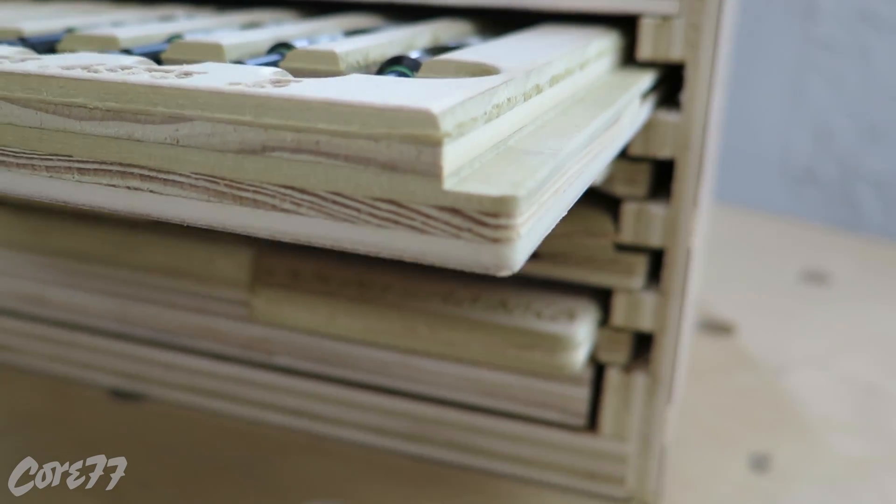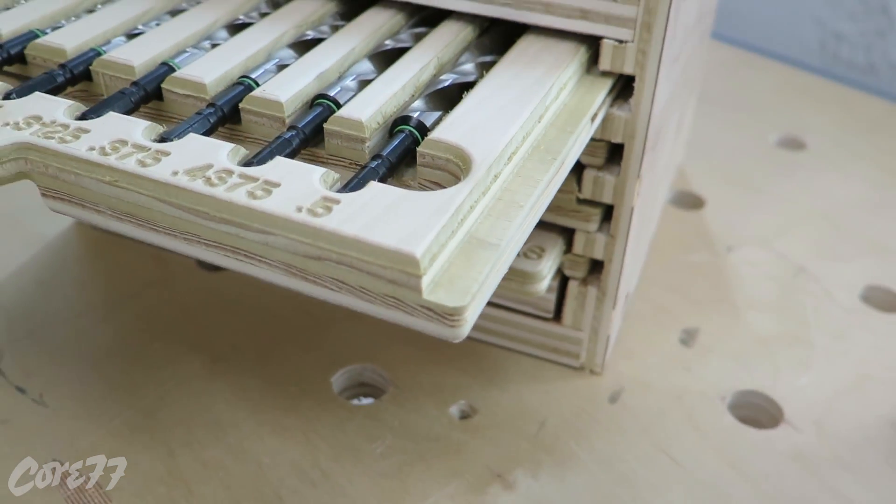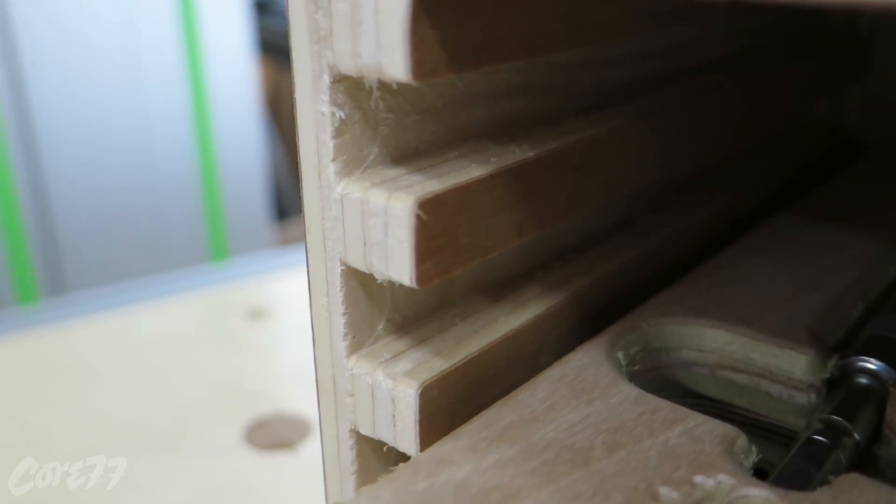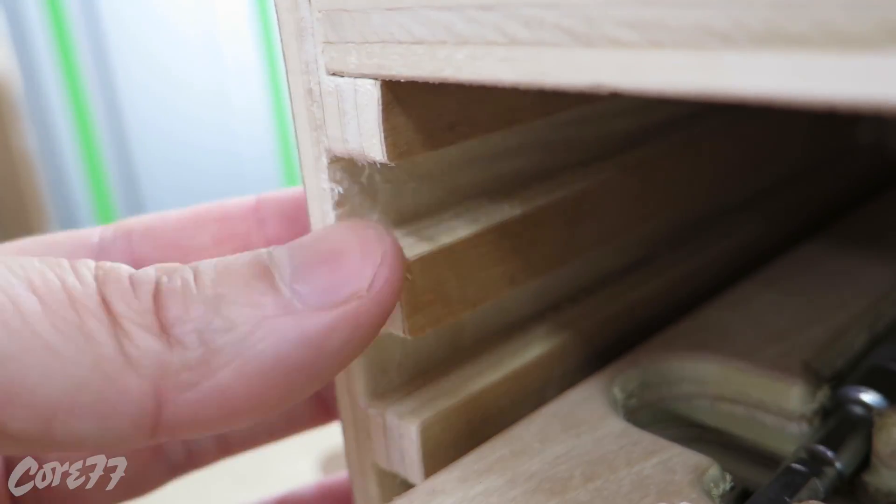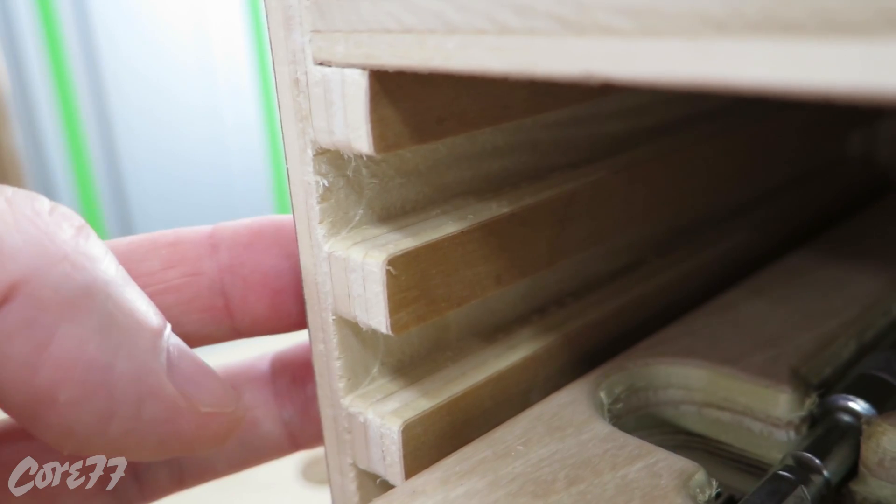Cutting rabbits for the drawer slides is a pretty common shop trick, and it was simple for the CNC to cut dados into the box sides to accept those rabbits. And then I had it round the front corners off to make it a little easier to get the drawers in and out.